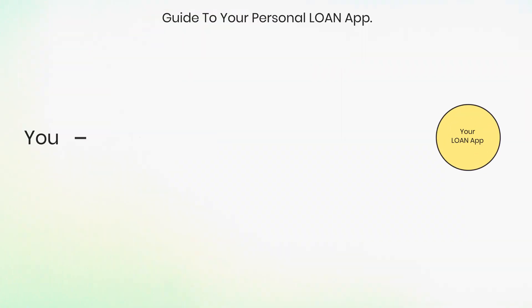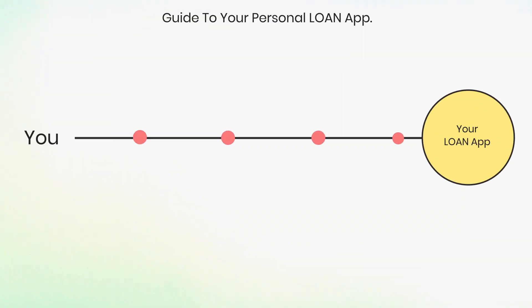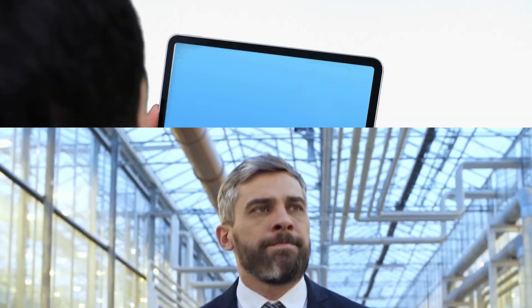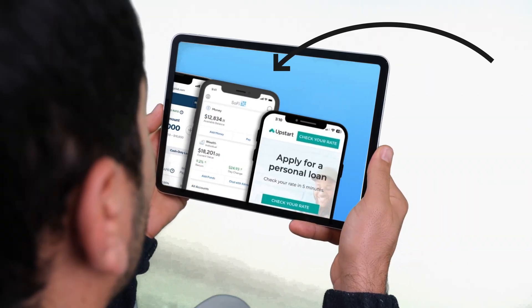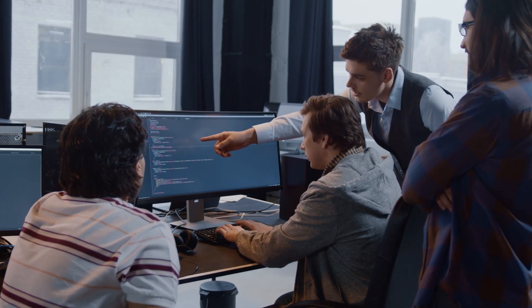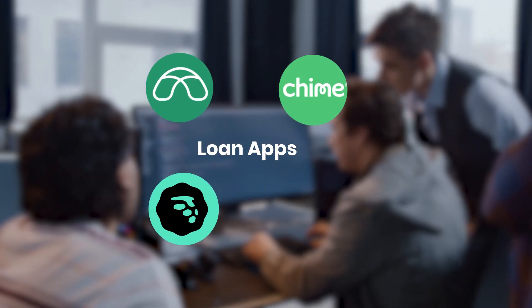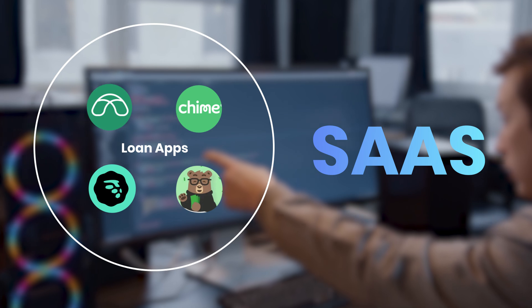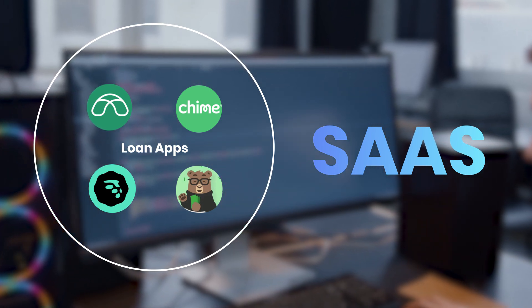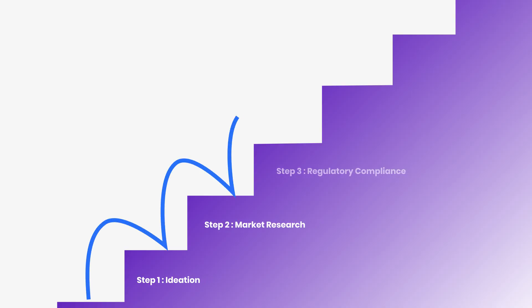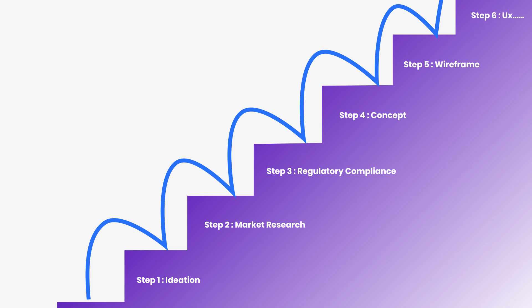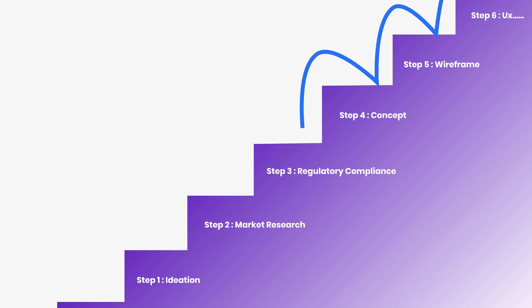Hello and welcome to our guide on building a personal loan app. If you are an entrepreneur looking to break into the fintech space, you have made a smart decision by watching this video. Creating a personal loan app like Picket, Shine, Moneylion or Dave is a fantastic SaaS product idea that can significantly impact the financial industry. We are going to provide you with a step-by-step guide on how to build a money lending app, making the process clearer and more manageable. By the end of this video, you'll have a solid understanding. Let's dive right in.